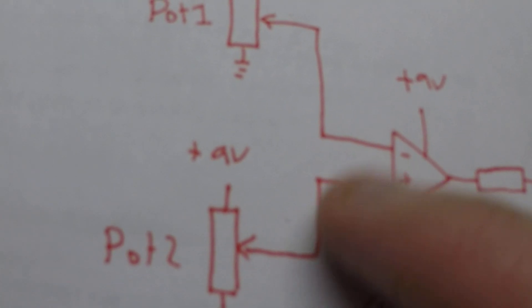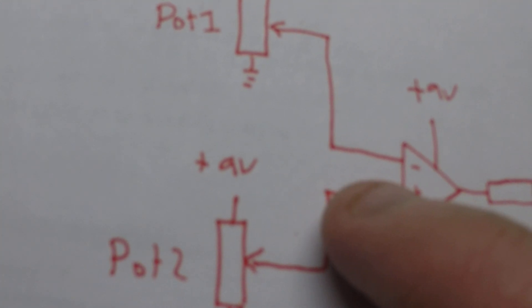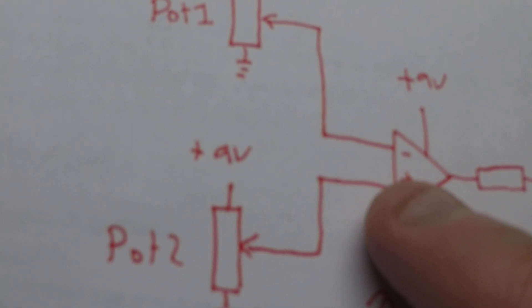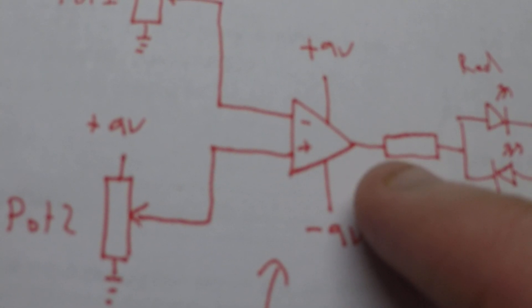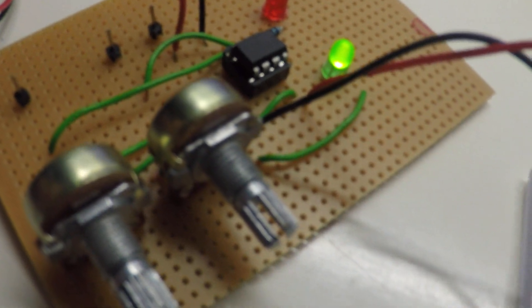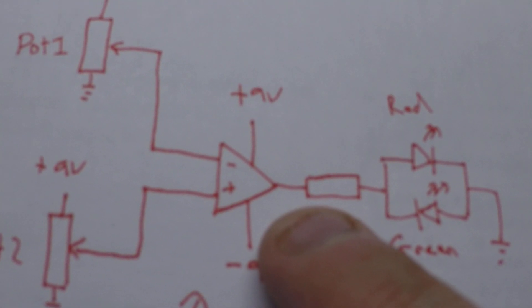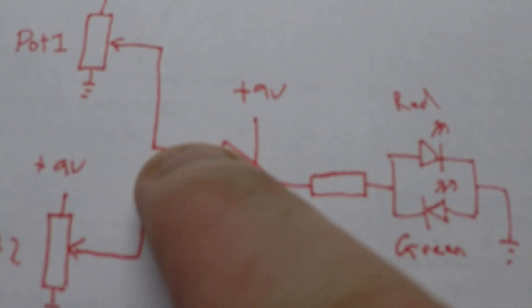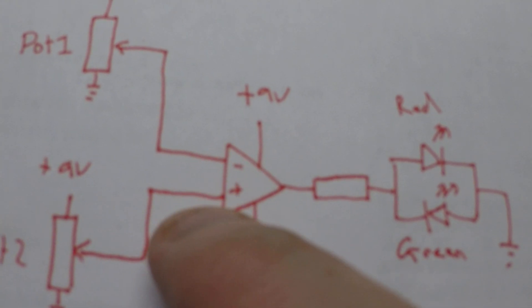So basically, it just depends what's going on here. Whichever has the highest voltage, the op amp becomes super saturated and then the output will flip between positive and negative 9 volts. So at the moment, because the green light is on, I actually know that this is negative. So that means that the negative input has a greater voltage than the positive.